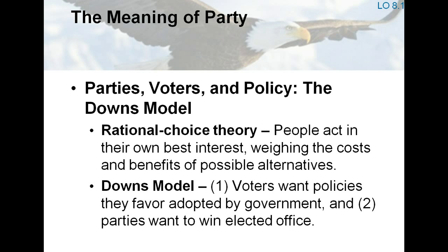Parties, voters, and policy: the Downs model. Anthony Downs has provided a working model of the relationship among voters, parties, and policy, employing a rational choice perspective. Rational choice theory assumes that parties and political actors have goals, such as winning elections, that are more important to the party than ideology. If both parties and voters are rational, both will try to select the best way to achieve their goals. In order to win office, the wise party pursues policies that have broad public appeal. The majority of the American electorate are in the middle, and successful parties in the U.S. rarely stray from the midpoint of public opinion.